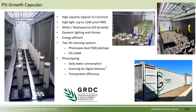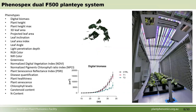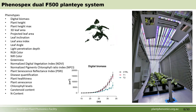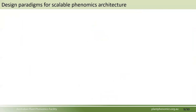We can do things like measuring daily water consumption, 3D scanning, and transpiration efficiency. We've had a lot of success with the PhenoSpex dual Plant Eye — their current version is the F600, which is even higher resolution. There's a massive list of things you can get out of these sensors; they work really well and PhenoSpex has been great to work with. It's embedded in one of our capsules so we can do daily or hourly 3D scanning of every single plant.